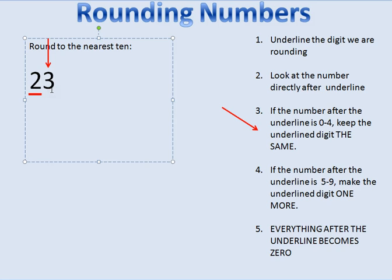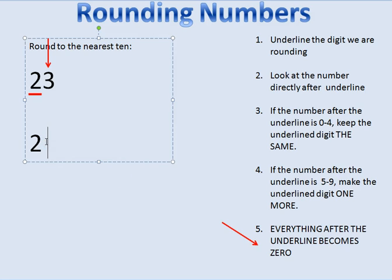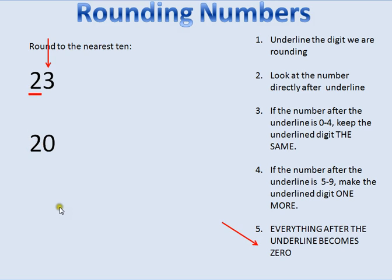One thing I like to say is 'high five' — if it's five or more, we make this number go bigger; if it's less than five, we keep it the same. In this case it's three, so we're going to skip step four because it's not five through nine. Everything after the underline becomes zero, and since three is less than five, we keep the underlined number the same.